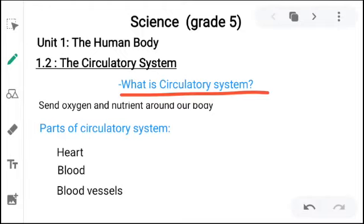Let's talk about the parts of circulatory system. Circulatory system has three main parts: heart, blood, and the blood vessels. Blood vessels are the vessels through which the blood travels all around the body.